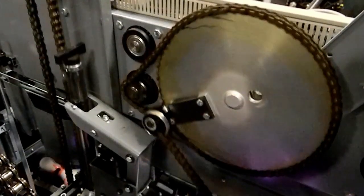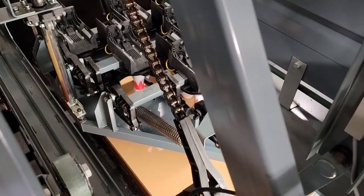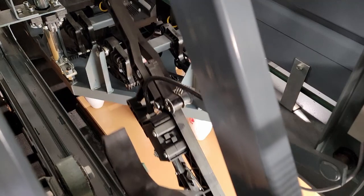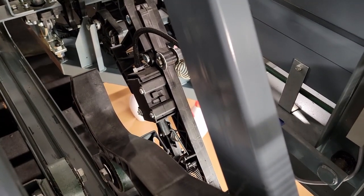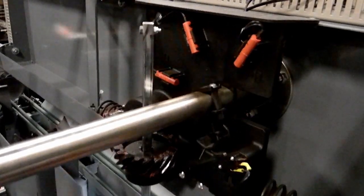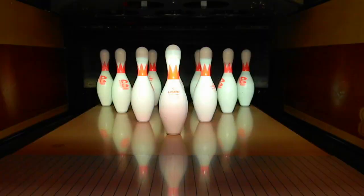The clockwise motion of the setting table crankshaft positions the sweep release assembly to allow the tipper to pick up the sweep to the ready to bowl position. The table motor shuts off at switch A and the pin setter is now ready for the next ball delivery.